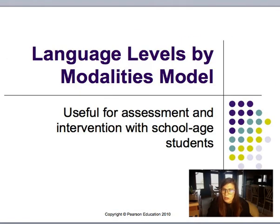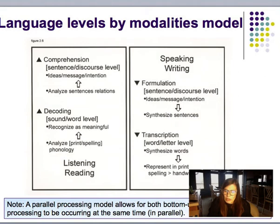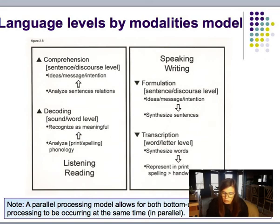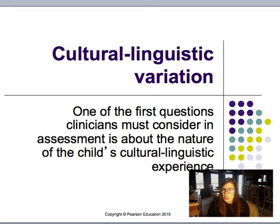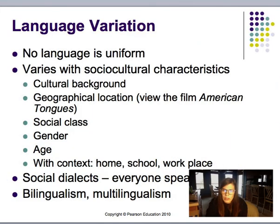The language levels by modalities model is useful for assessment and intervention with school-age students. On the left side, listening and reading involve a top-up process, while on the right side, speaking and writing involve a bottom-down process. The language levels are sound and word, as well as sentence and discourse. The different modalities are listening, speaking, reading, and writing. One of the first questions clinicians must consider in assessment is about the nature of the child's cultural linguistic experience.